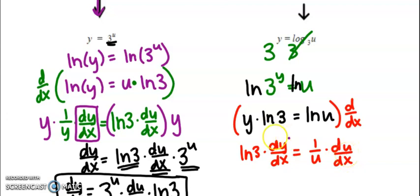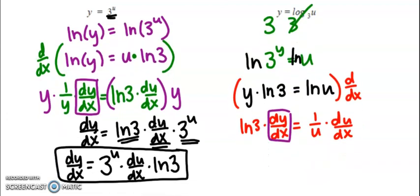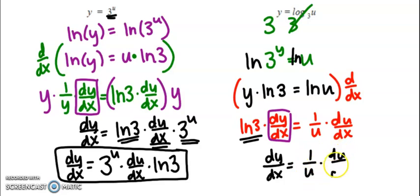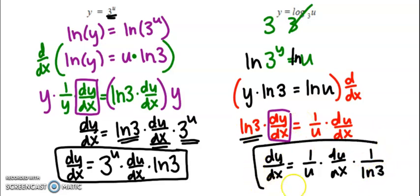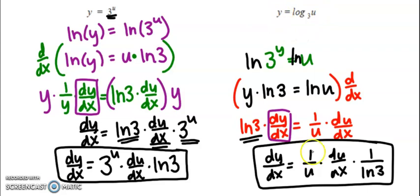My goal was to solve for dy/dx. I just need to divide both sides by the natural log of 3. So dy/dx equals 1 over u times du/dx times 1 over the natural log of 3. Notice the similarity: when I took the derivative of a natural log, I had 1 over the argument times the derivative of the argument. With log base 3, I have the same rule except I'm also multiplying by 1 over the natural log of 3.